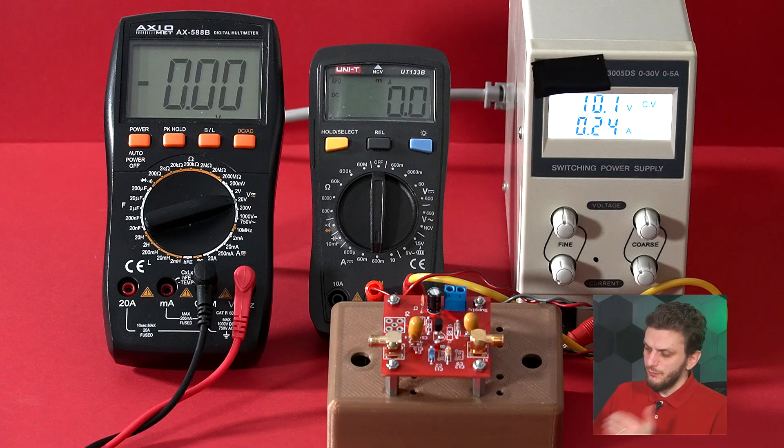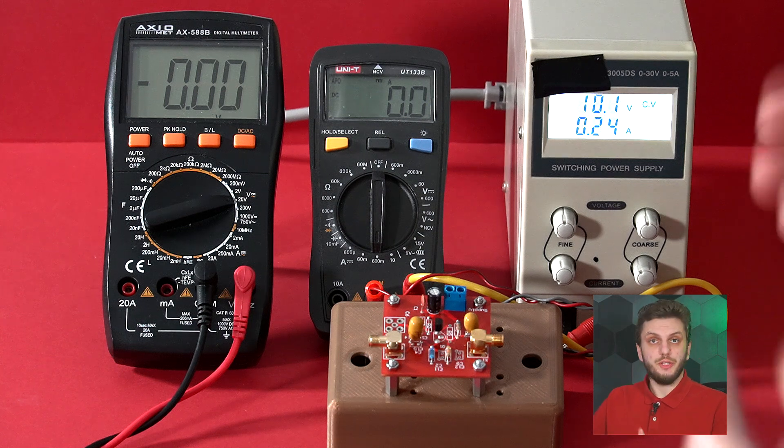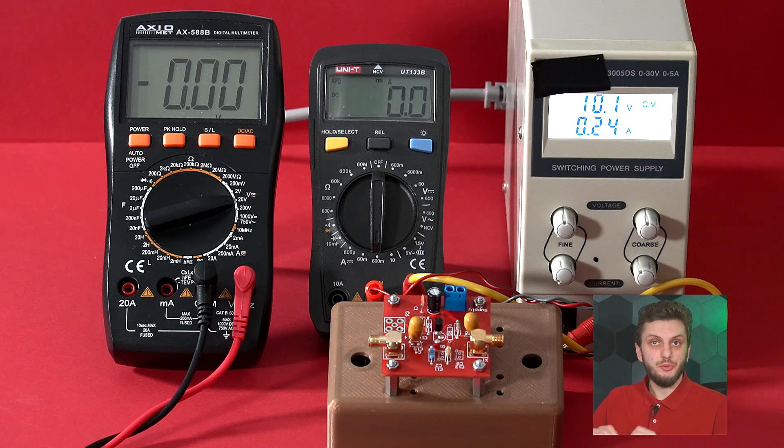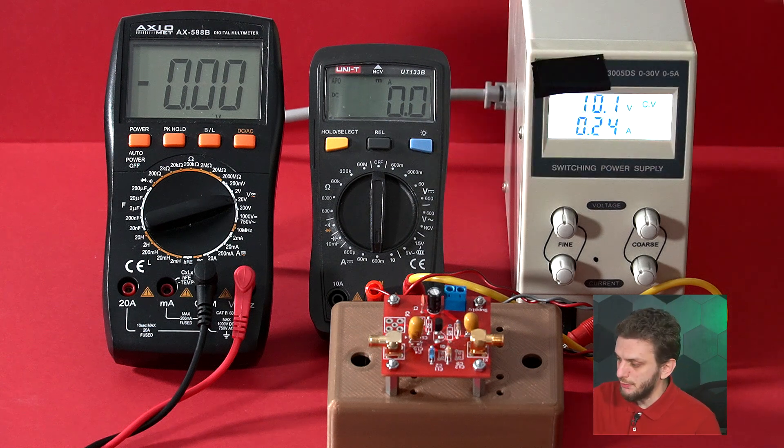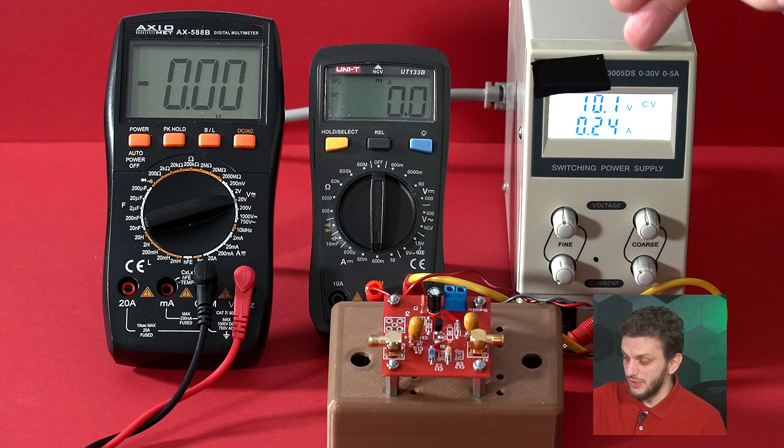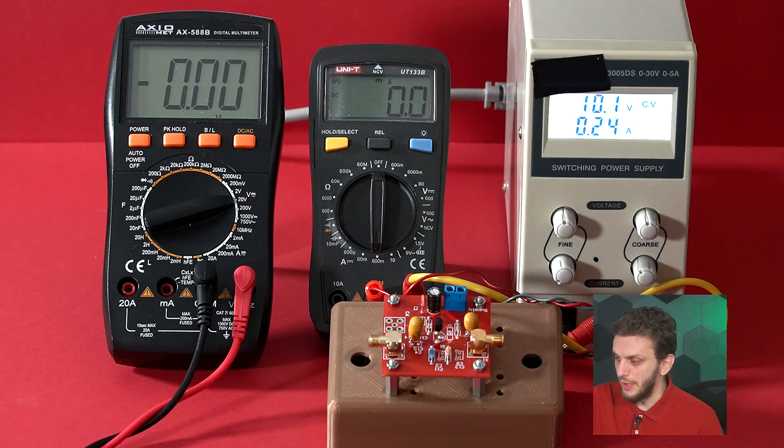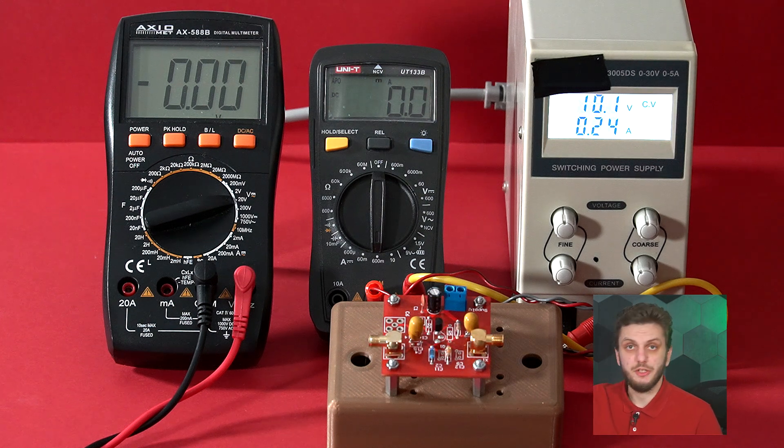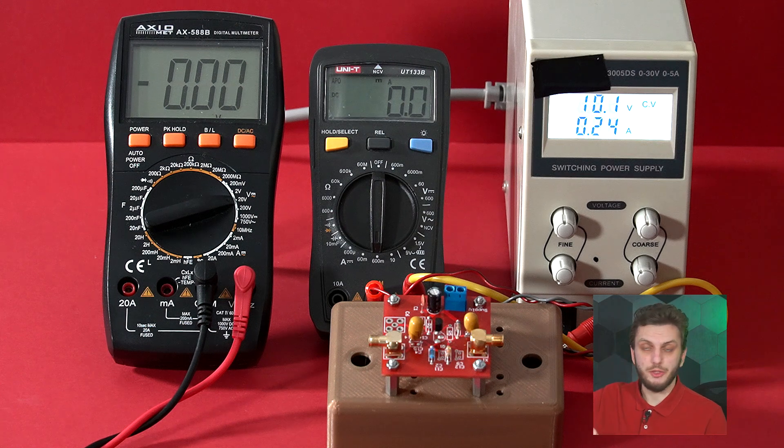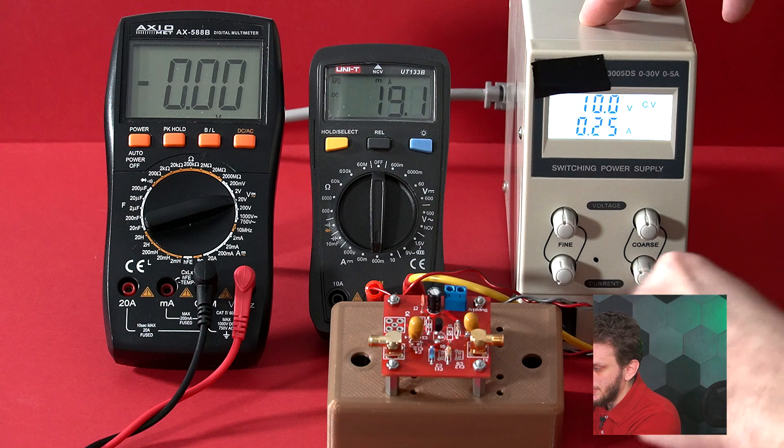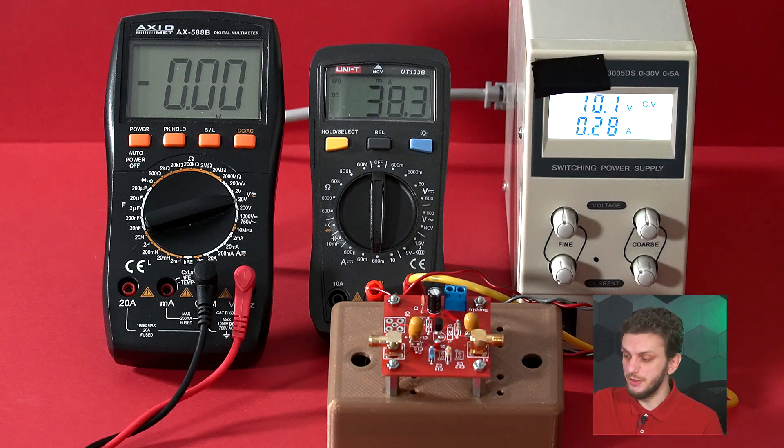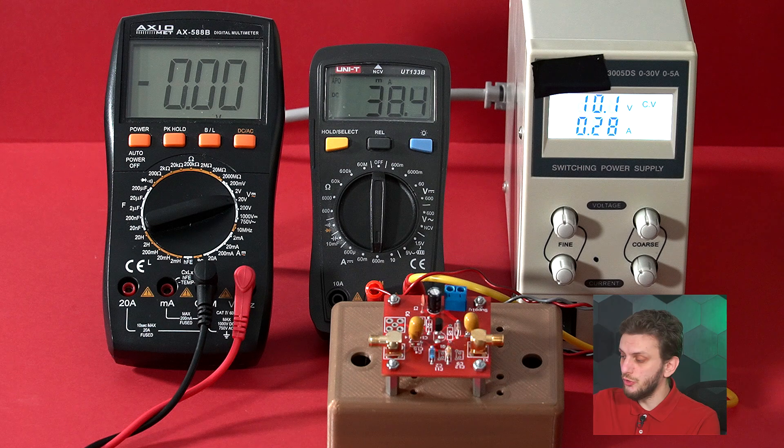First things first, we need to check that the circuit is working correctly by checking the bias point and the overall current consumption. For that, I prepared the setup where I'm supplying the board from a 10V power supply through an amp meter, and then I have a secondary voltmeter to perform various measurements. If we connect the power supply, we can see that we have about 38 milliamps of current consumption for the entire board.